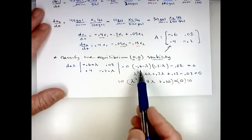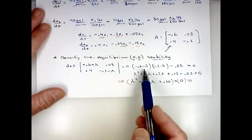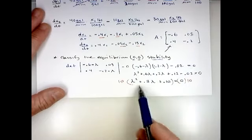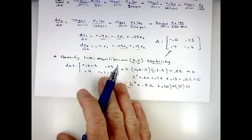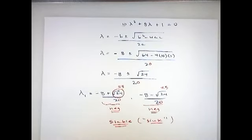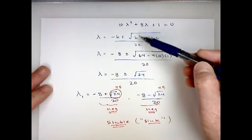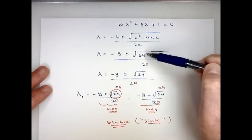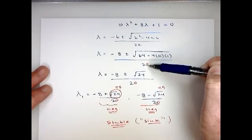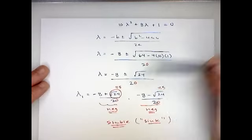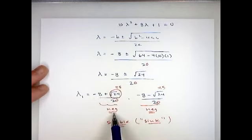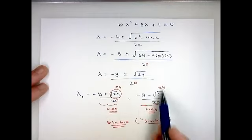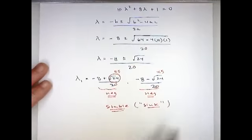The matrix is [−0.6, 0.05; 0.4, −0.2]. To classify stability we find the eigenvalues. Setting up the determinant equal to zero and multiplying both sides by 10 gives 10λ² + 8λ + 1. This doesn't factor, so using the quadratic formula: λ = (−8 ± √(64 − 40)) / 20 = (−8 ± √24) / 20. Since √24 is about 5, both eigenvalues are clearly negative.